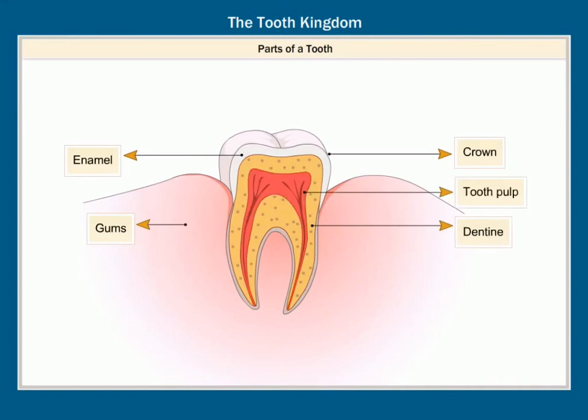Tooth pulp is the soft central portion of the tooth that lies between the crown and the dentin. It contains blood vessels and nerves, which are connected to the gums. Pulp is protected by the dentine.